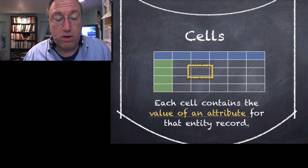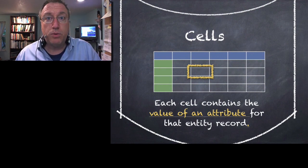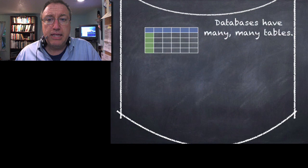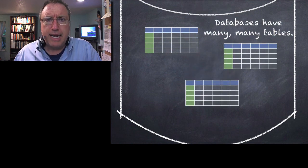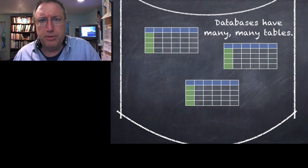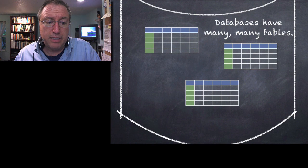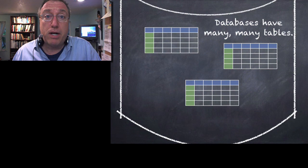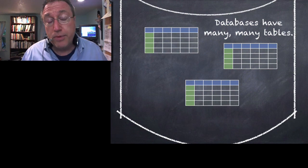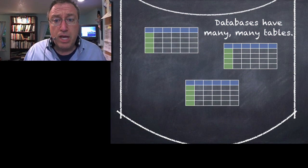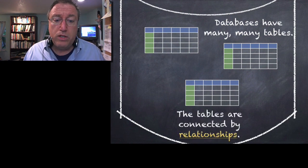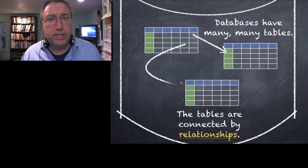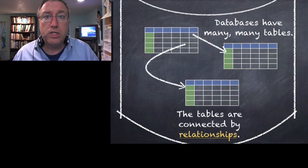Now, entities have all sorts of relationships with each other, so we represent that as well. A database can have many, many tables. In our class, we'll do just a handful to keep it easy. But even in a small project, like the one I'm working in now, you can have hundreds of tables. To connect them all, to show the relationships between the entities, we use primary keys and foreign keys. We'll go over this more later on.